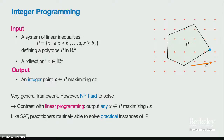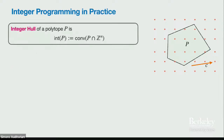Even though integer programming is NP-complete, just like in SAT, practitioners are able to solve practical instances of integer programming pretty routinely. The general idea for all of these algorithms is to reduce from integer programming to linear programming. For this, we need the notion of the integer hull of a polytope: you look at all integer points contained in the polytope and take their convex hull.